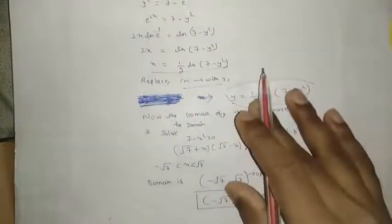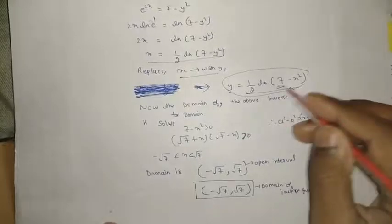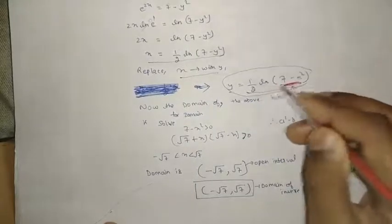Now how to find the domain of this function? We can see the domain by noting that 7 - x² in the ln function must be greater than 0.